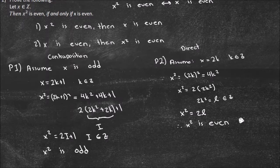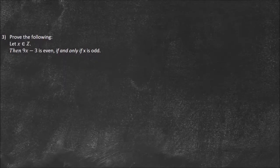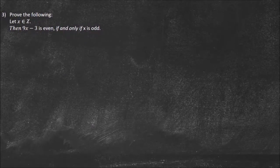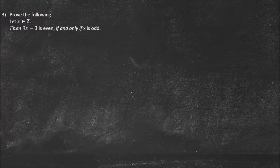Hopefully that makes sense. That shows X squared is even if and only if X is even. We had to show both sides — that's the important part. And now this last one is another example where we're going to have to prove both sides. Let X be an element of Z: 9X minus 3 is even if and only if X is odd.